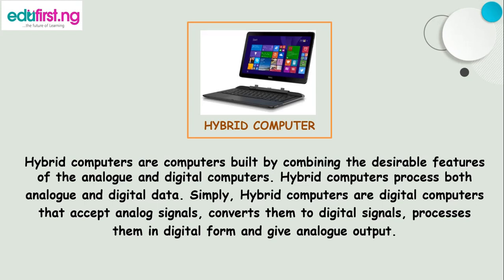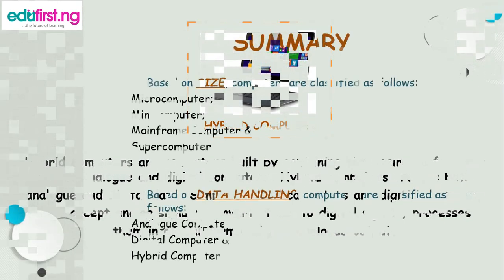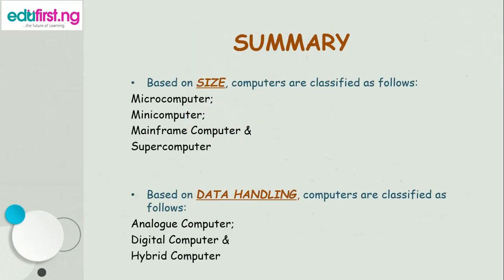So, so far so good. We can summarize what we have learned as follows. Based on size, computers are classified as microcomputer, minicomputer, mainframe computer, and supercomputer. Based on data handling, computers are classified as analog computer, digital computer, and hybrid computer.